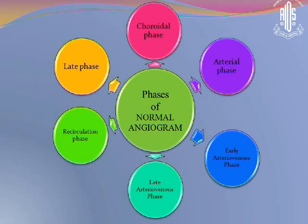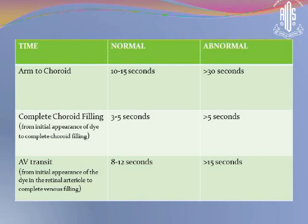As we inject the dye, there is filling of the blood vessels, which can be seen in various phases of the normal angiogram: starting with the choroidal phase, arterial phase, early arteriovenous phase, late arteriovenous phase, and then recirculation in the late phase. The arm-to-choroid time is 10 to 15 seconds, and if it is more than 30 seconds, it is abnormal. Complete choroidal filling takes about 3 to 5 seconds; if more than 5 seconds, it is again abnormal. The arteriovenous transit time is 8 to 12 seconds, so roughly in about 30 seconds, the initial phases of the angiogram are over.